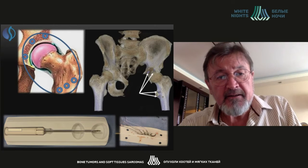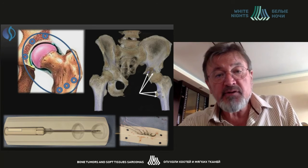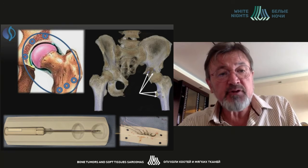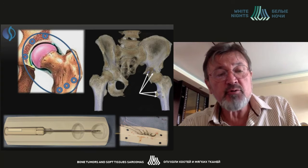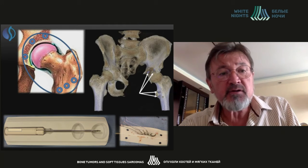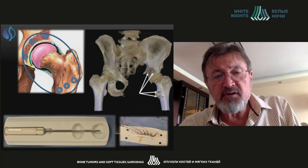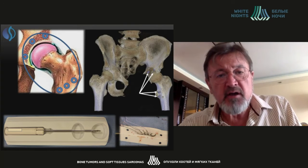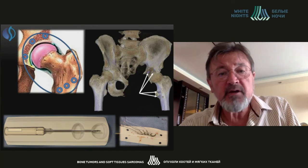If the acetabulum is affected — just a lesion in the acetabulum — we propose the following: a resection of the acetabulum in order to eliminate the dislocation or subluxation of the pelvic bones, and we perform fixation by means of anchors. Inside this handle there are four threads with needles which allow us to fix the adjacent tissue. You can see these particular fixation points.